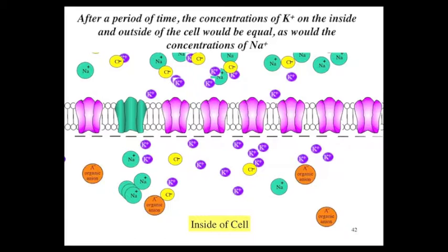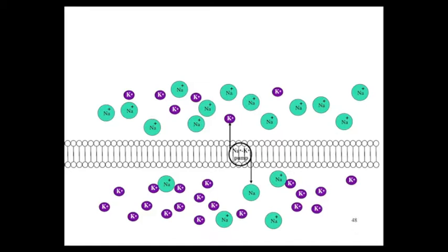After a period of time, the concentrations of potassium on the inside and outside of the cell would be equal, as would the concentrations of sodium. The battery would run down. How do you prevent that?